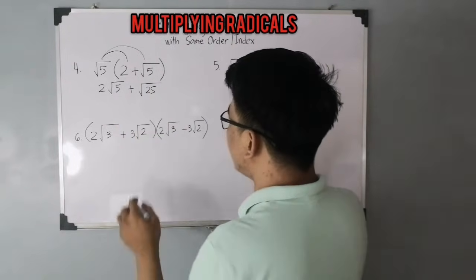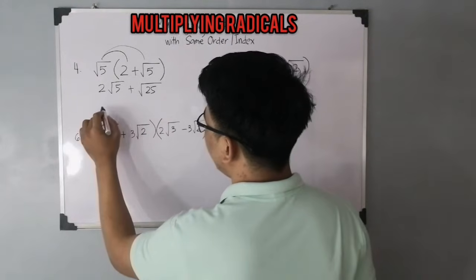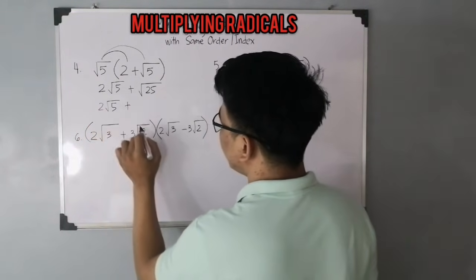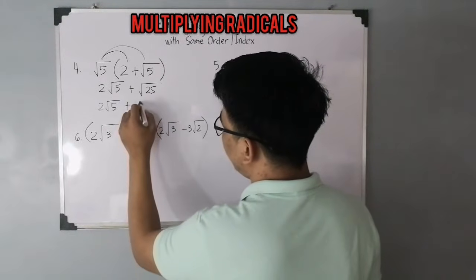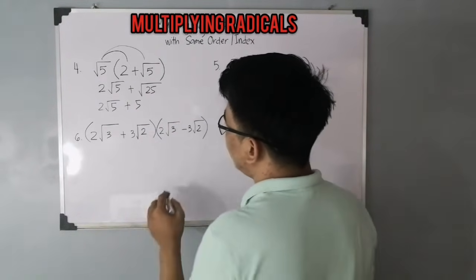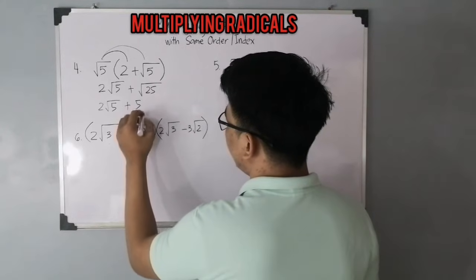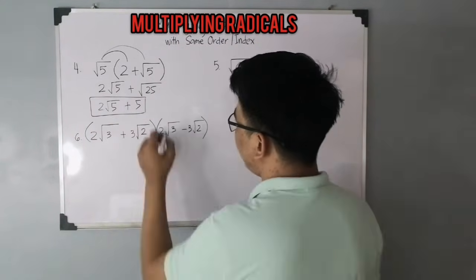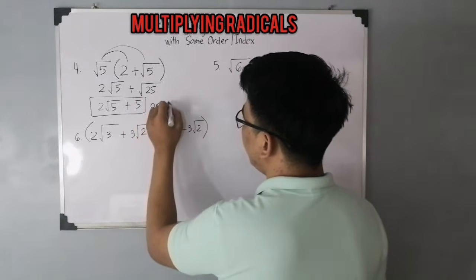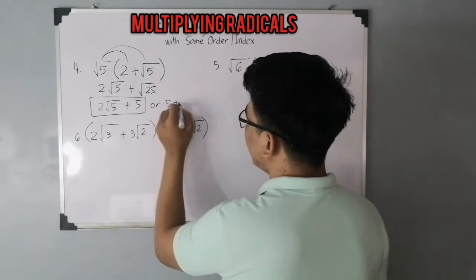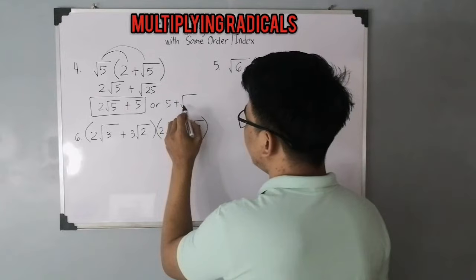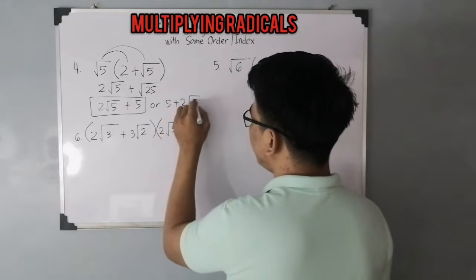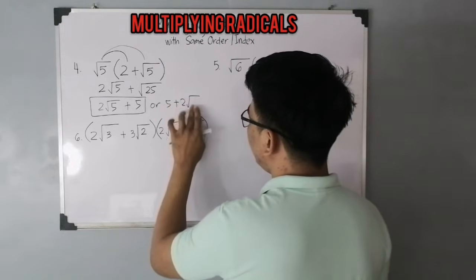Simplifying, the square root of 25 is simply 5. So the answer is 2 square root of 5 plus 5.